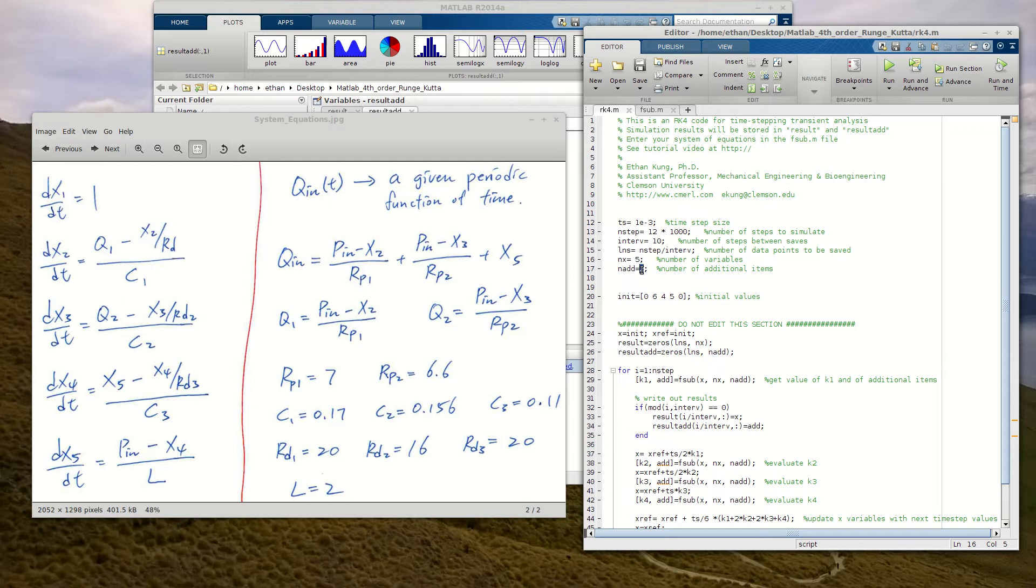And then here, you can specify how many additional variables you want to keep track of. Basically, in the results, the differential variables will be automatically recorded. And if you want to write out additional results, you have to specify how many additional variables you want to keep track of.